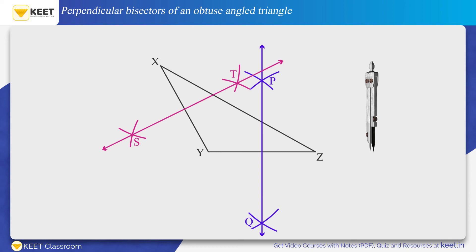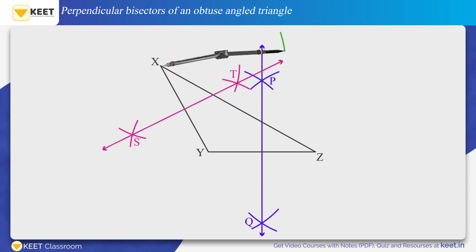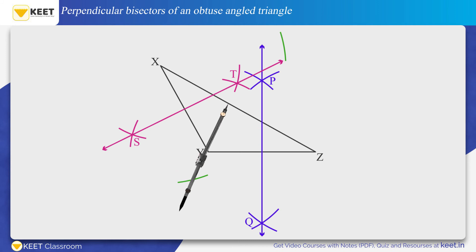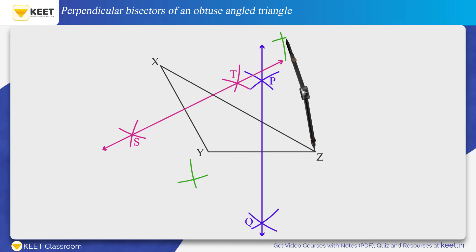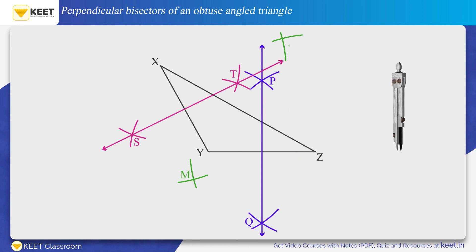Now let us draw the perpendicular bisector of side XZ. From vertex X, make arcs on both the sides of XZ as shown on the screen. Similarly, from vertex Z, make arcs on both sides of XZ as shown on the screen. Name the intersection of the arcs as M and N respectively. Now draw a line passing through the points M and N. Thus, the line MN is the perpendicular bisector of XZ.